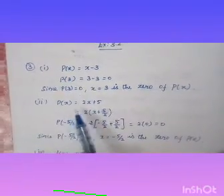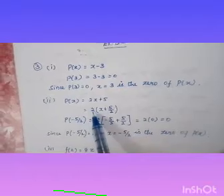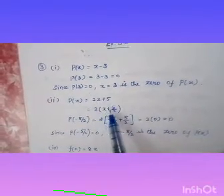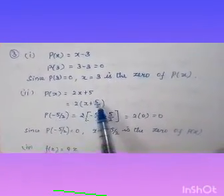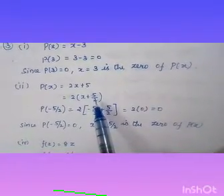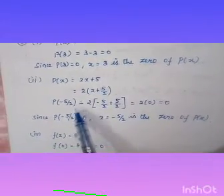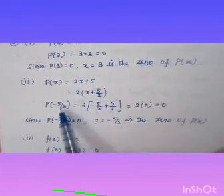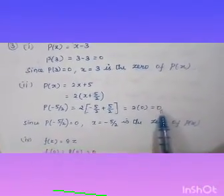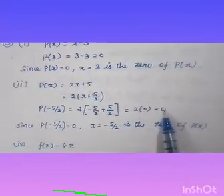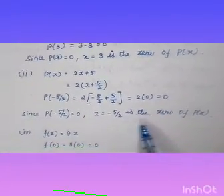Second problem: p of x equals 2x plus 5. Take the coefficient 2 outside, giving 2 times (x plus 5 by 2). Setting x plus 5 by 2 to zero gives x equals minus 5 by 2. Checking: p of minus 5 by 2 equals 2 into minus 5 by 2 plus 5 by 2, which equals 2 into 0 equals 0. So minus 5 by 2 is the zero of p of x.